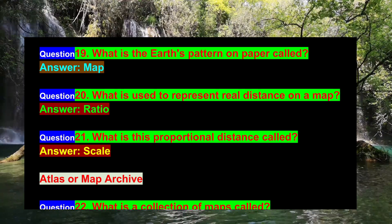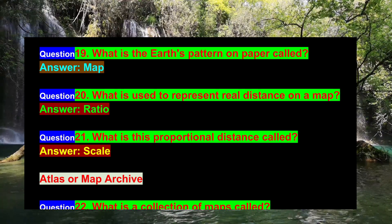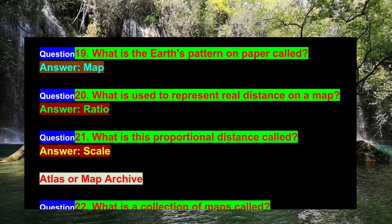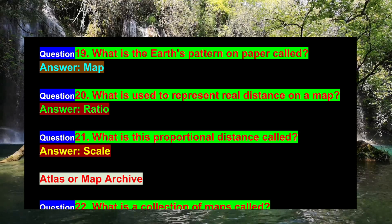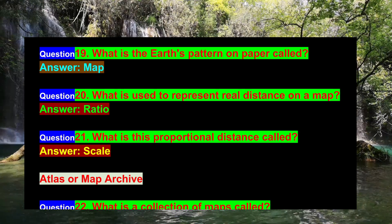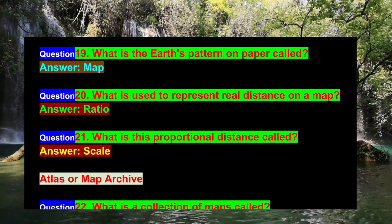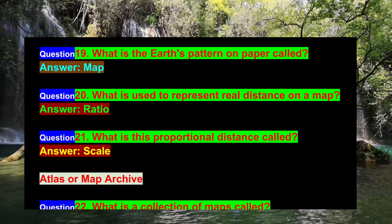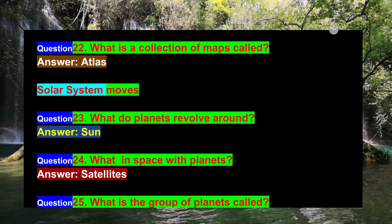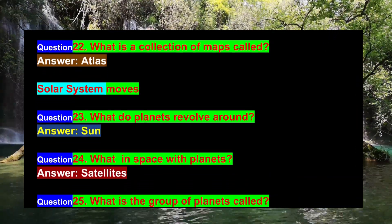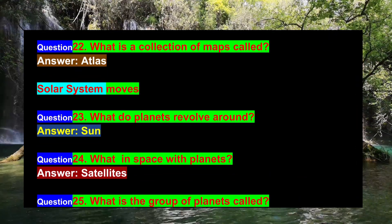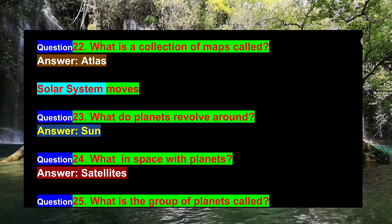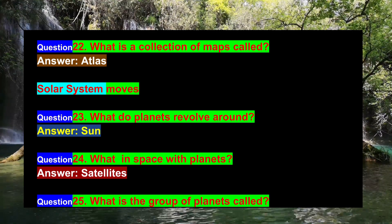Question 20: What is used to represent real distance on a map? Answer: Ratio. Question 21: What is this proportional distance called? Answer: Scale. Question 22: What is a collection of maps called? Answer: Atlas.